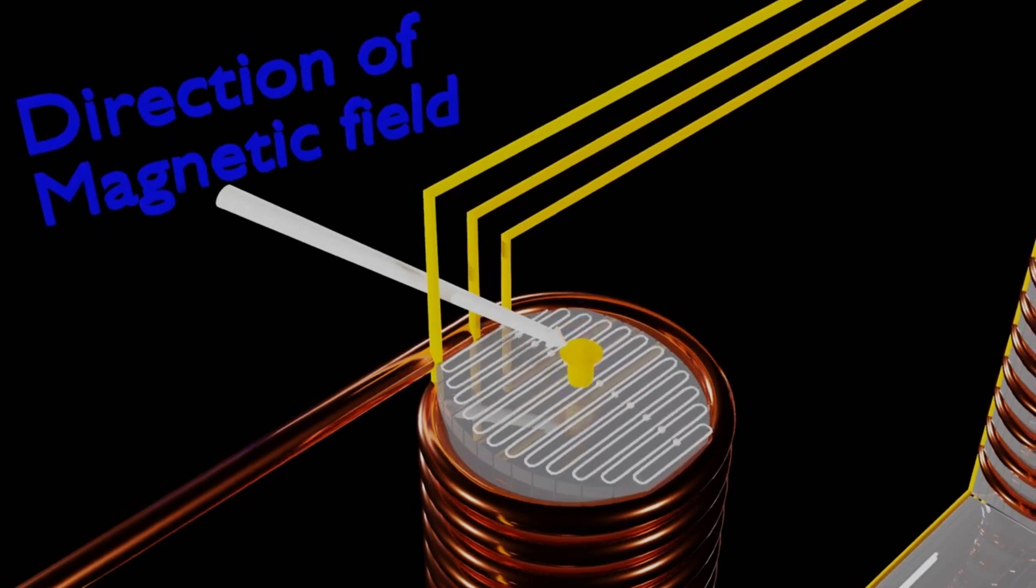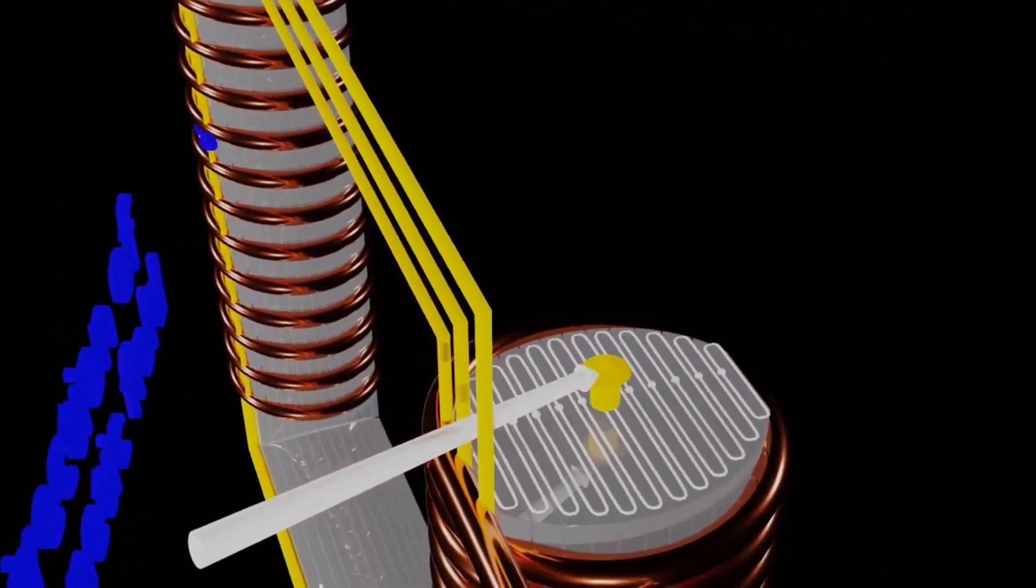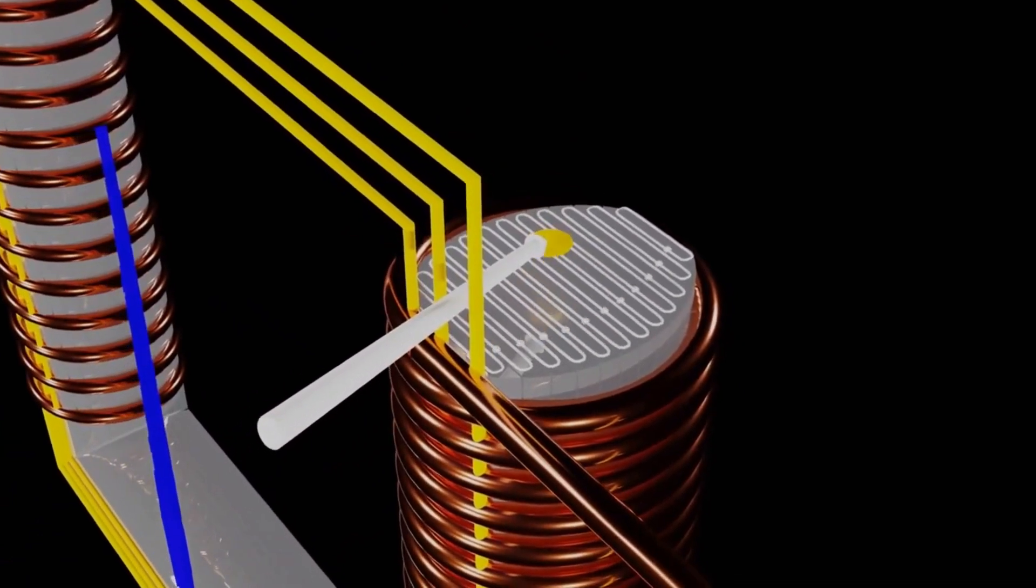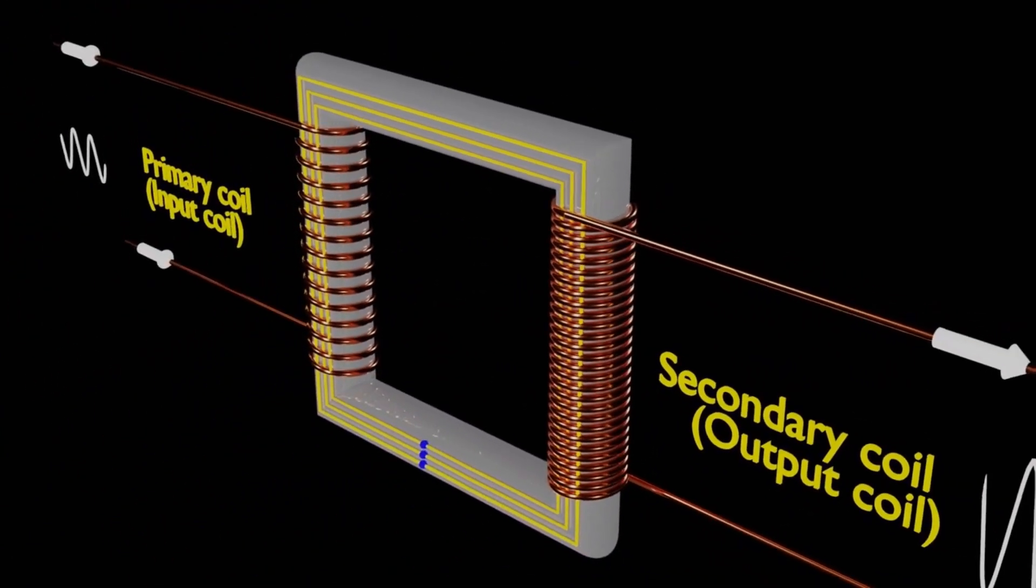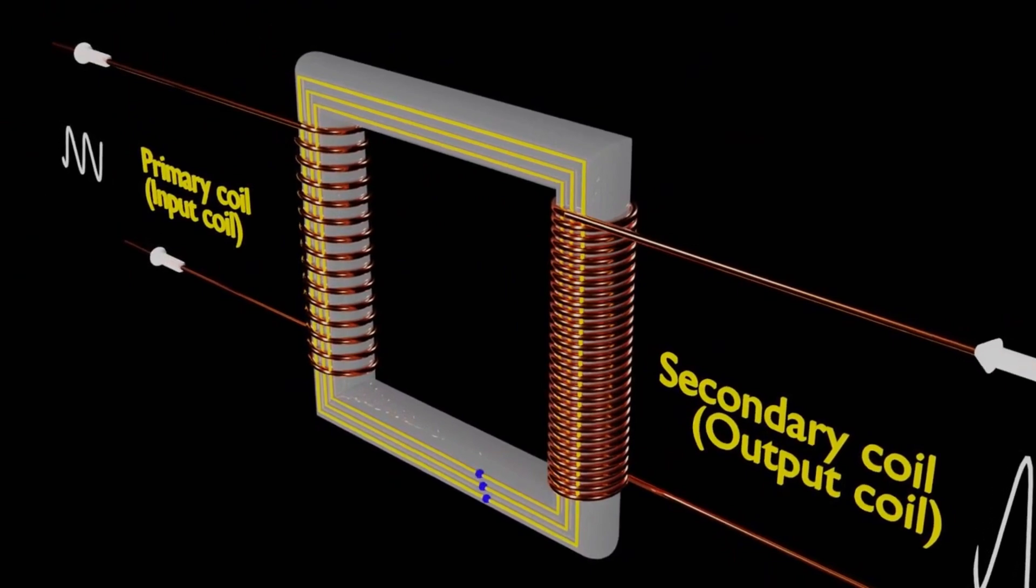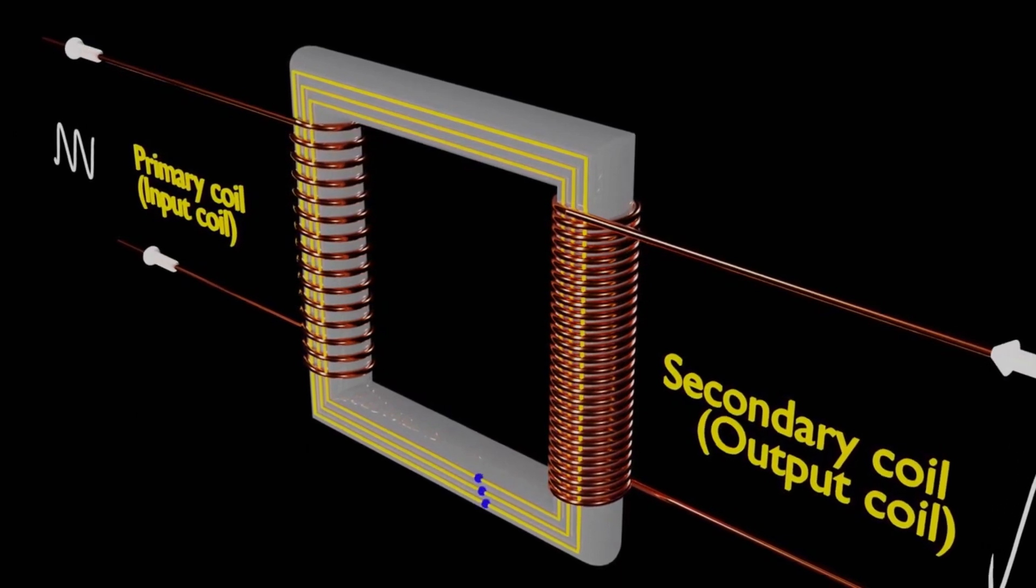But there's another layer to this, no pun intended. The insulation between the laminations also plays a crucial role. It helps to prevent the formation of continuous loops for the eddy currents, further decreasing energy losses. Think of it as an additional barrier that keeps those troublesome eddy currents in check.